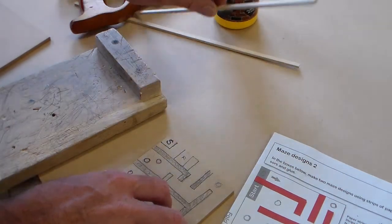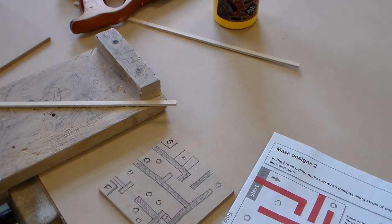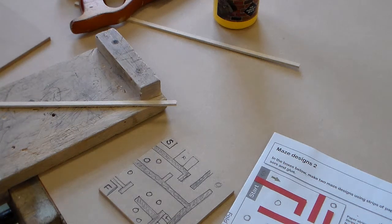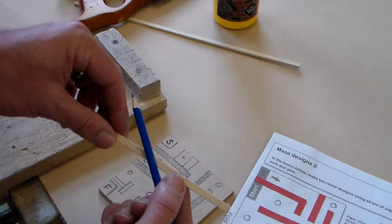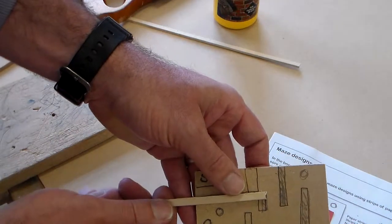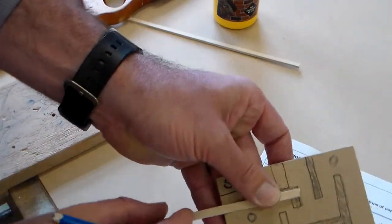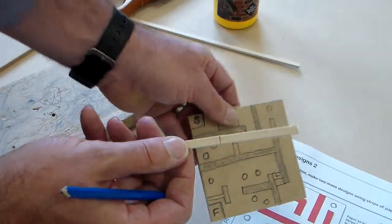Now the first thing we're going to do is just take our pencil and one of the strips and offer that up and we can see our first strip needs to be that long.